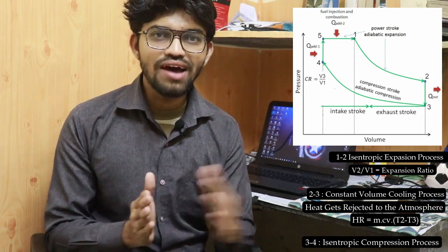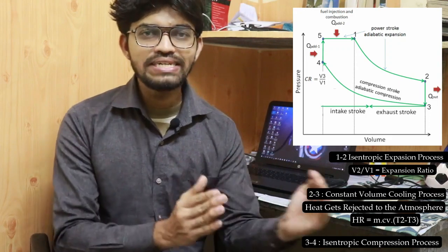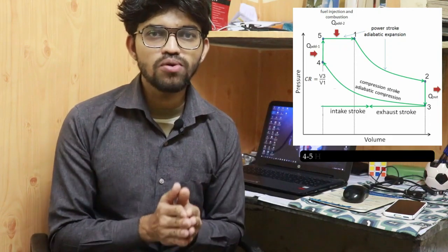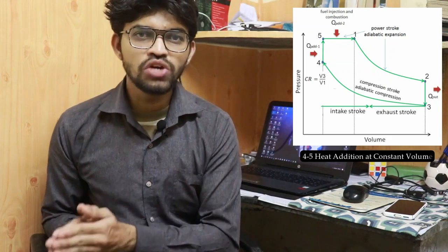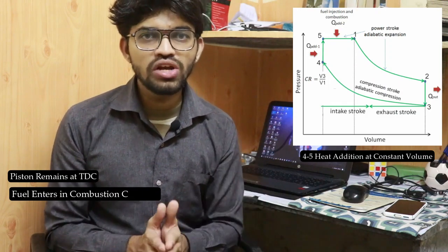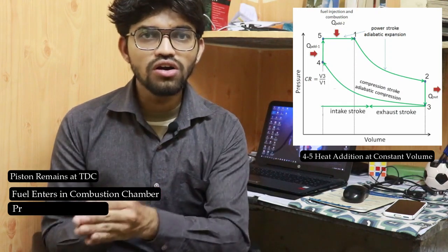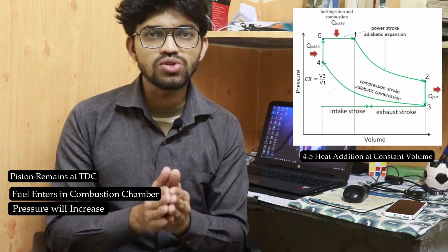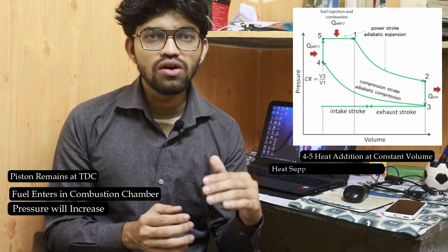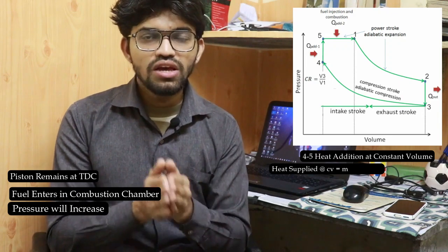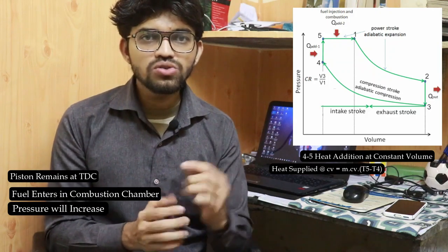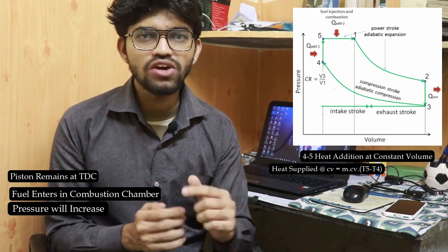After the compression stage, heat addition takes place at constant volume. Process 4 to 5 is the constant volume heat addition process. During this process the piston remains at top dead center, fuel enters the engine cylinder, and ignition occurs at constant volume. The total heat supplied during process 4 to 5 is calculated as: Q_4-5 = m × Cv × (T5 − T4).